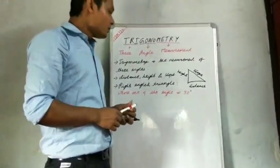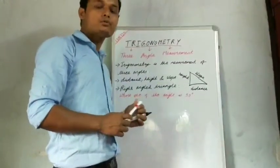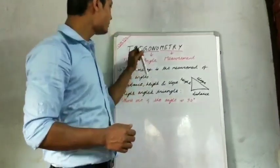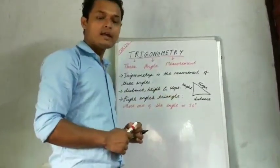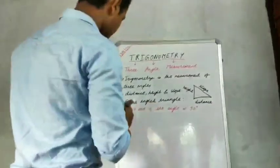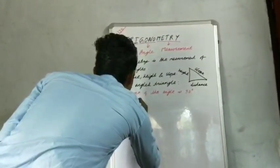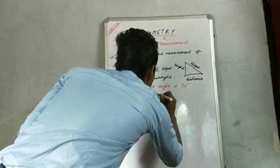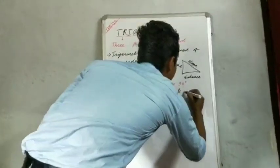Now, we all know that a triangle has three sides, but we don't know the names of these three sides. In this chapter, Trigonometry, the names of the three sides of a triangle have been given. They are: hypotenuse (H-Y-P-O-T-E-N-U-S-E), perpendicular (P-E-R-P-E-N-D-I-C-U-L-A-R), and base.